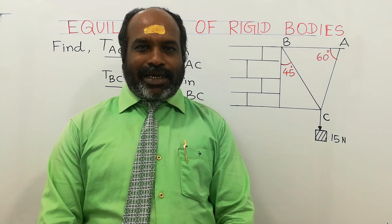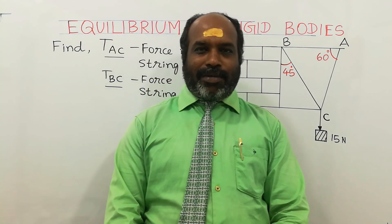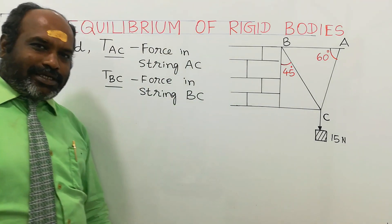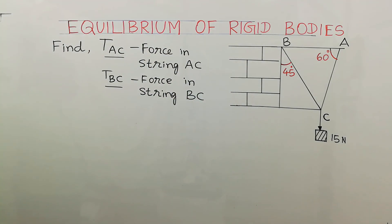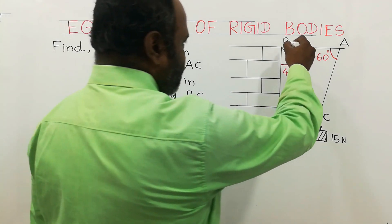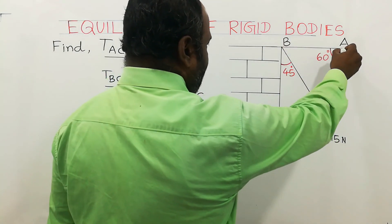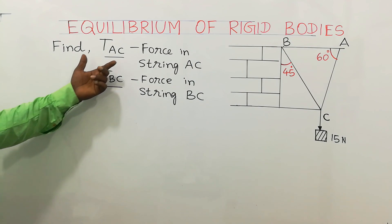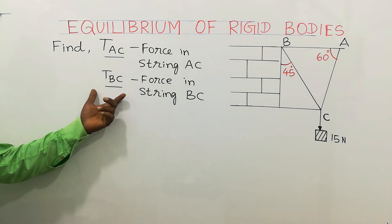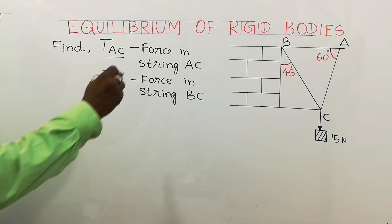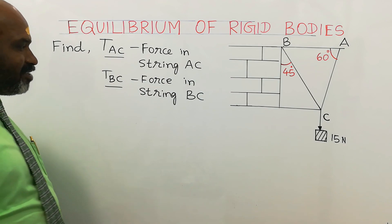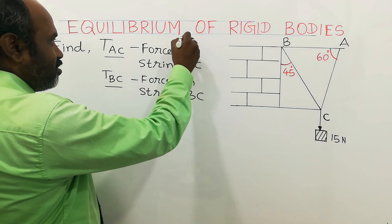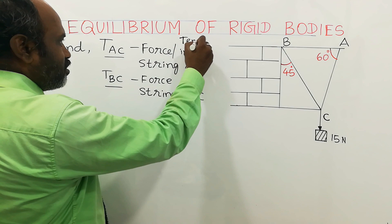Welcome to Talipu Engineering Mechanics. I will talk about a sub-topic which is about equilibrium of rigid bodies. Consider a question diagram given, marked as A, B and C. You are asked to find TAC and TBC. TAC means a force or tension — T stands for force or tension. Tension is one type of force.